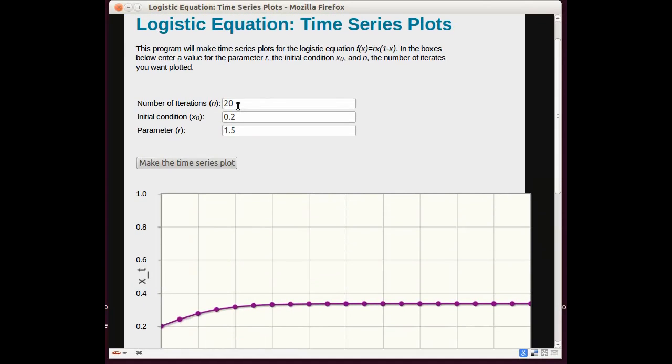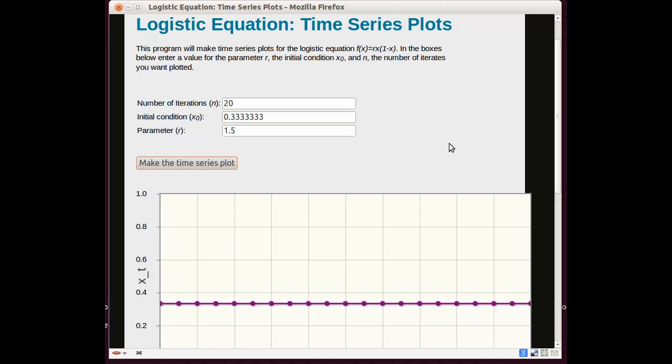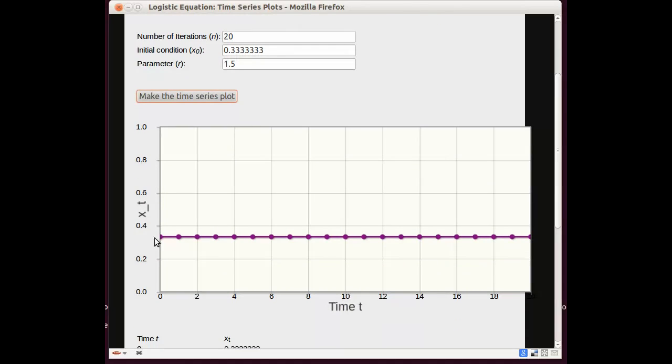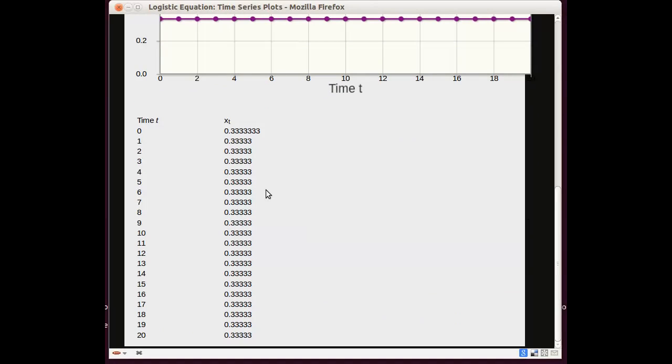Let's see if this really is a fixed point. We can check with algebra, but we can also do an experiment using the computer. I put in 0.333, make the time series plot, and we can see that the point is indeed fixed. It doesn't go up or down. And you can see that also in the table of numbers.